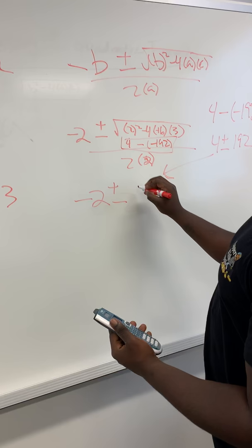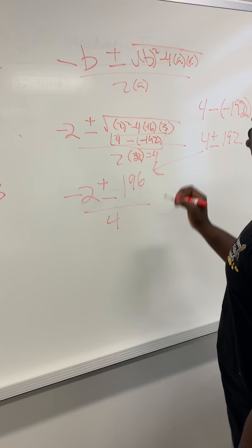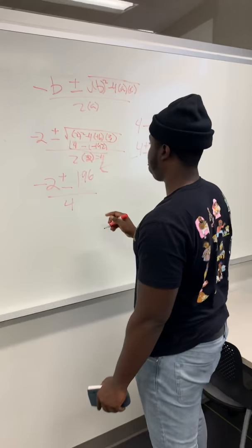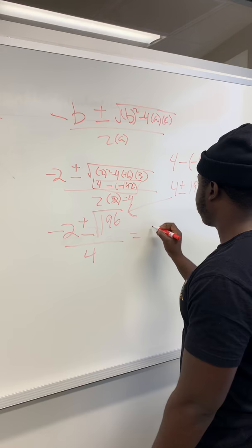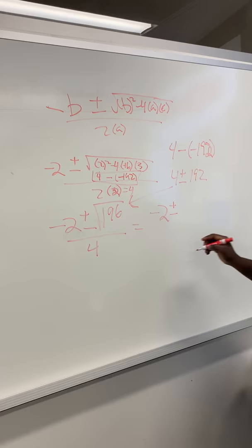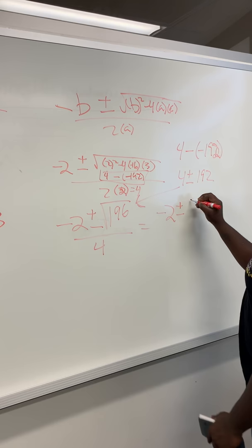So it'll be 196 all over 4. Sorry that it's all messy. Everything is still under the radical.